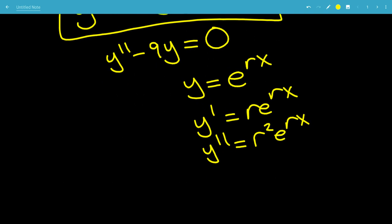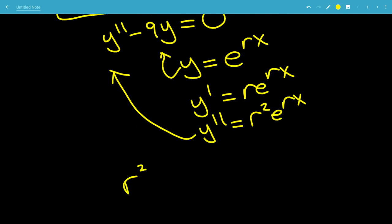y prime will be r e to the rx, and y double prime will be r squared e to the rx. Plugging all this in, so y double prime there and y there, we're going to have r squared minus 9, all multiplied by e to the rx, and that's equal to 0.